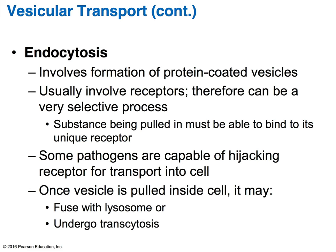Phagocytosis involves the formation of a protein-coated vesicle. Usually it involves receptors, making it a very selective process — the substance being pulled into the cell must bind to a unique receptor. Some pathogens are capable of hijacking a receptor to get inside. Once a vesicle is pulled inside the cell, it can either fuse with the lysosome or undergo transcytosis.